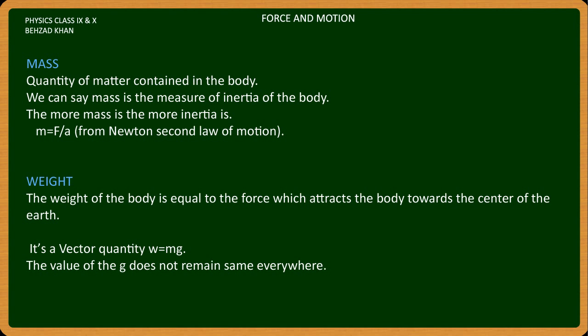Weight of the body is equal to the force which attracts the body towards the center of the Earth. It's a vector quantity, w equals mg. The value of g does not remain the same everywhere. As we have just discussed, mass is constant on Earth, but weight is different in different places.